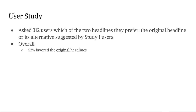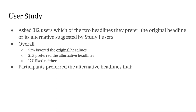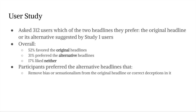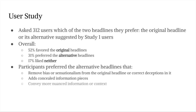We also looked at how the types of changes influenced whether people preferred the original or the alternative headline. We found that users are more likely to prefer an alt headline when it attempts to remove bias or sensationalism from the original, or correct deceptions, or fix clickbait by adding concealed information, or when it conveys more nuanced information or context. In contrast, users did not prefer the alt headlines when they added bias or sensationalism, or when they simply copy-edited the original headline.